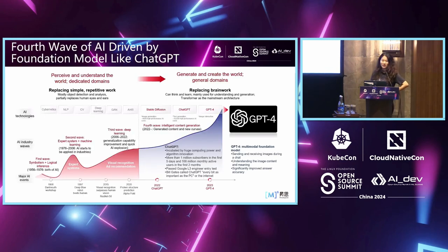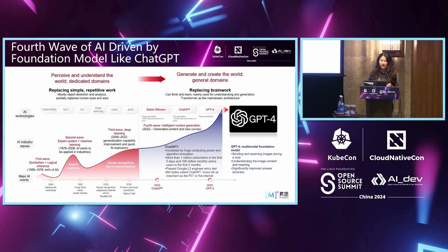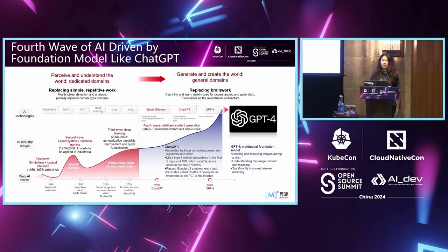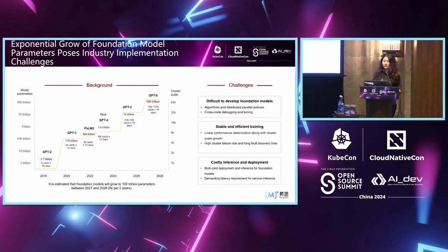We are currently experiencing the fourth wave of artificial intelligence, characterized by the rise of large language models such as ChatGPT and GPT-4. This seems to redefine the role of machine learning and deep learning — from perceiving and comprehending the world's data in a restricted field towards generating images, text, and other forms of content in a general domain. It can also work as an assistant with professional knowledge of a particular area, representing a big jump in model capability. This is powered by the exponential growth in the size of large language models.